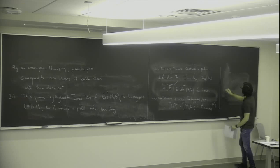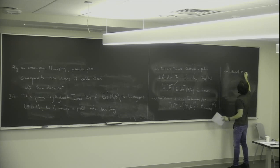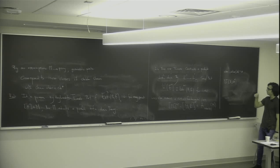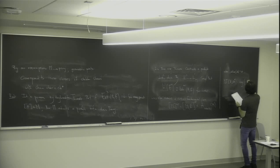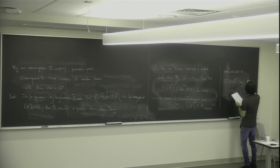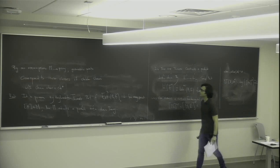When the virtual dimension of M is equal to zero, things become nice because the DT invariant — the degree of the zero-dimensional virtual class — is an integer. The DT invariants of X with Chern character ch* equal the degree of this zero-dimensional virtual class.